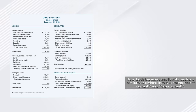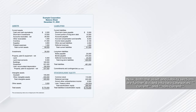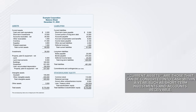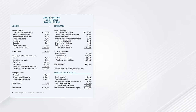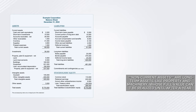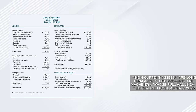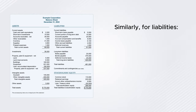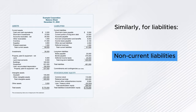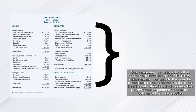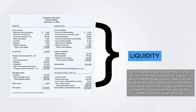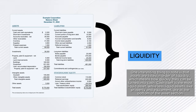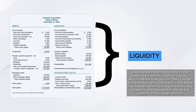Both the asset and liability sections are further divided into two categories: current and non-current. Current assets are those that can be converted into cash within a year, such as short-term investments and accounts receivable. Non-current assets are long-term assets, like property and machinery, whose full value can't be realized until after a year. Similarly, current liabilities are expected to be paid off within a year, while non-current liabilities are obligations that extend beyond a year. Assets are listed in order of liquidity — how quickly they can be turned into cash — with cash itself being the most liquid.